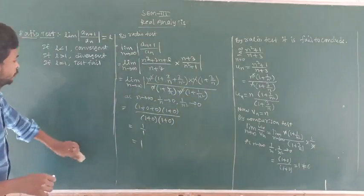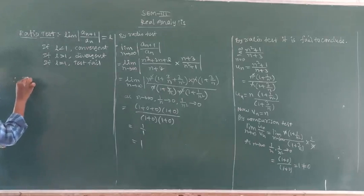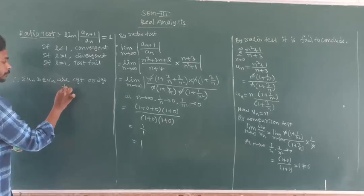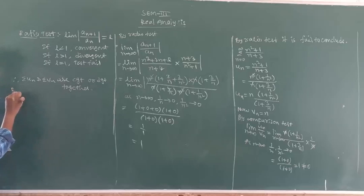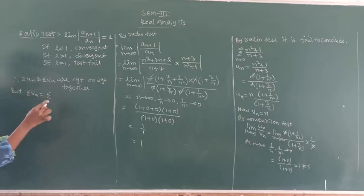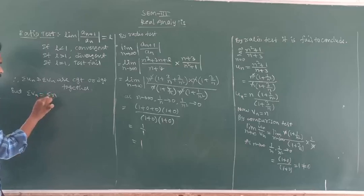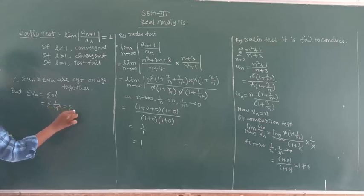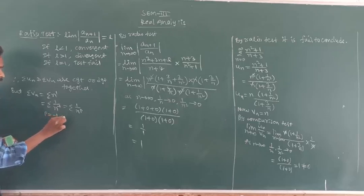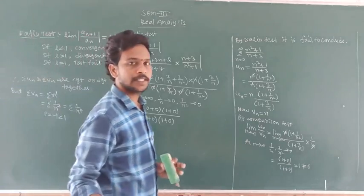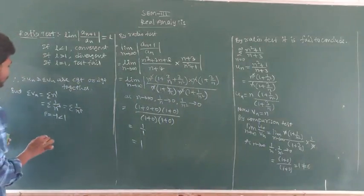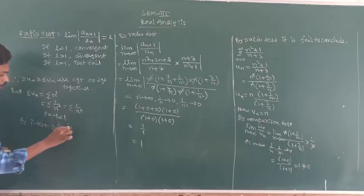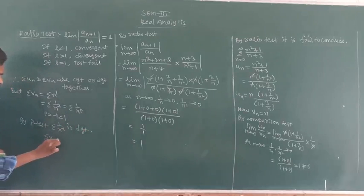Therefore, sum of u_n and sum of v_n are convergent or divergent together. But sum of v_n equals sum of n, which can be written as sum of 1 by n to the power of minus 1. It is in the form of 1 by n^p where p equals minus 1, which is less than 1. By the p-series test, sum of 1 by n^(minus 1) is divergent. Therefore sum of v_n is divergent.